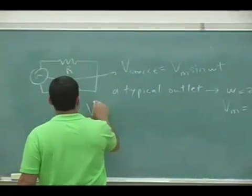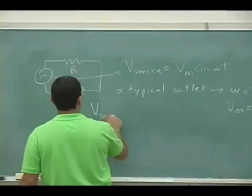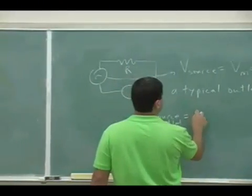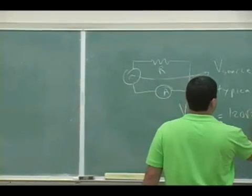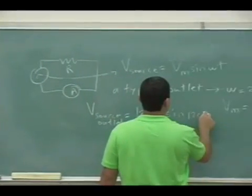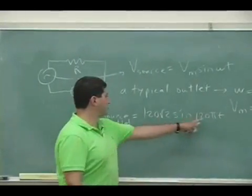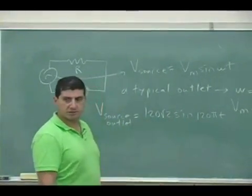So what the max is always - what we measure times root 2. Okay, so the typical source then, the source for the outlets, is 120√2 sin(120πt). So there were 120 appears twice.